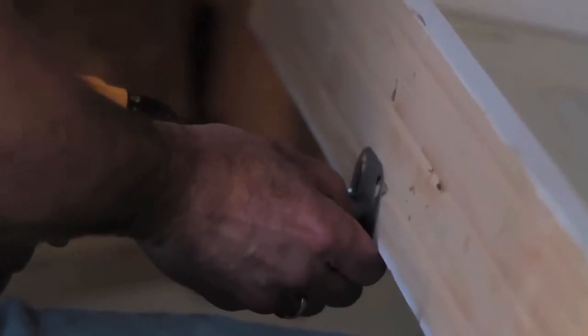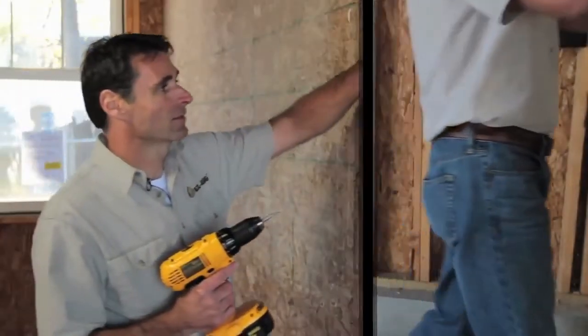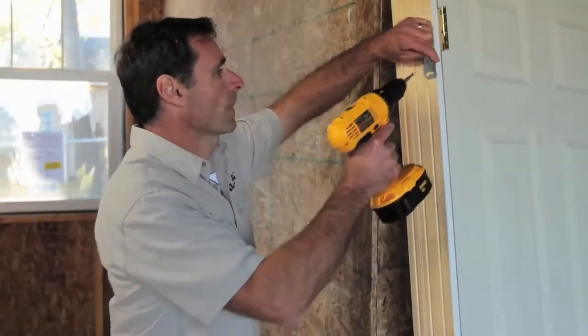There's no particular order you have to put the brackets on, but I usually start at the top and work my way down the hinge side, placing the bracket directly underneath each hinge.